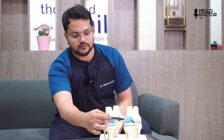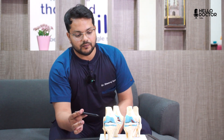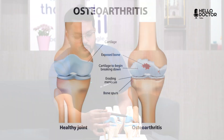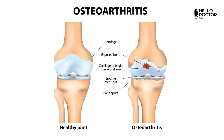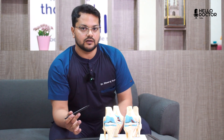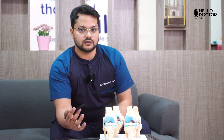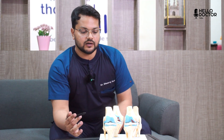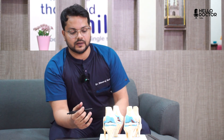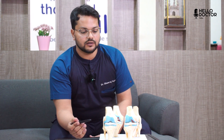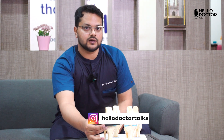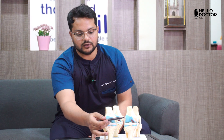The knee joint is made up of the meniscus, cartilage, and ligaments. The cartilage in the knee joint provides smooth joint mobility and acts as a shock absorber. When the cartilage degenerates due to age-related changes or stress, it becomes damaged.